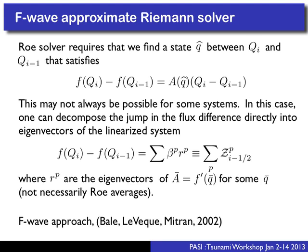To address this, recall that a Roe solver requires finding some state Q-hat between Q_i and Q_{i-1} — values in neighboring grid cells — satisfying a particular expression. This was the Rankine-Hugoniot jump condition in the nonlinear case. You have to be careful about how you choose Q-hat, using Roe-average values involving weighted square roots. This is required for conservation, but finding those Roe-average values may not always be possible for all systems.